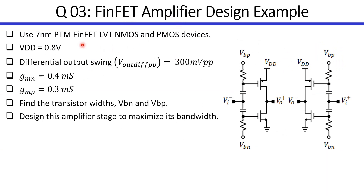We will use 7nm low-VT devices. We have a spec on the supply voltage, the differential output swing, the transconductance of the NMOS and PMOS devices, and the goal is to find the transistor width and bias voltages VBN and VBP. The target is to maximize the amplifier's bandwidth.